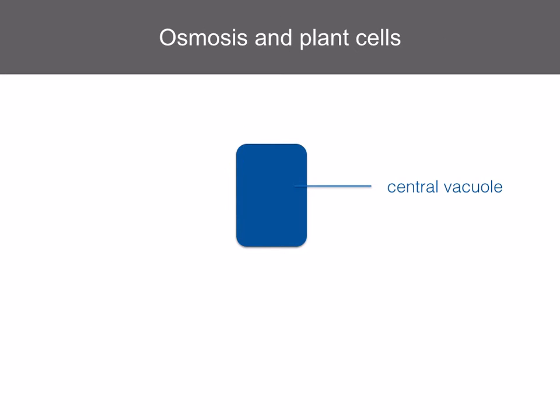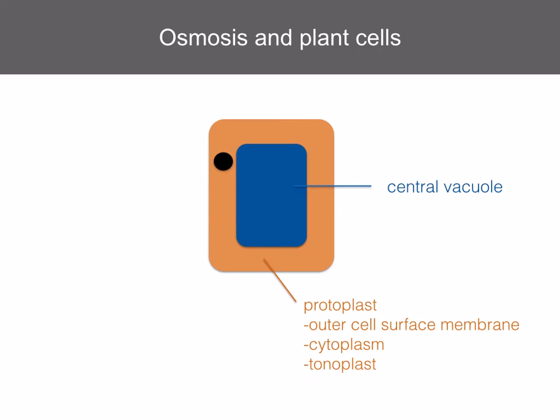Before we begin with the explanation of the plant cell, there are three parts you need to understand. The first is the central vacuole, which contains cell sap — a solution of salts, sugars, and organic acids in water. Then there's the protoplast, which includes the outer cell surface membrane, the cytoplasm, and the tonoplast, which is the vacuole membrane.